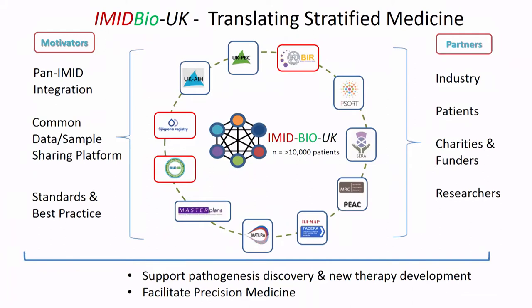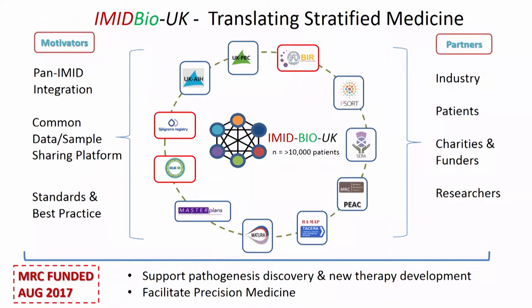About two months ago we took this to the MRC. IMID Bio UK is a partnership between all of these projects — many of the ones I've talked about, but also a Scottish RA cohort, autoimmune liver disease, Sjogren's syndrome, and a few other registries. We have more than 10,000 IMID patients. We're going to virtually integrate those into a bioresource and build a kind of mother-of-all-TransMarts that will contain all of this data, so we can start doing IMID discovery across it. I'm really glad to say that the MRC funded this last month, and we're hitting the ground running — we start this month.